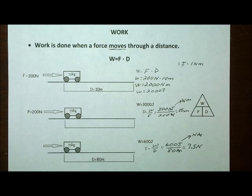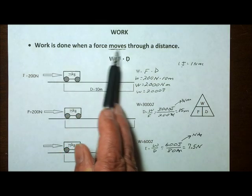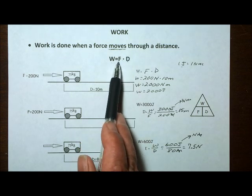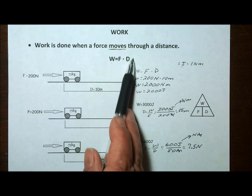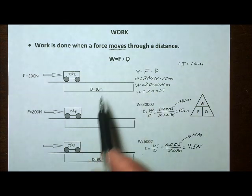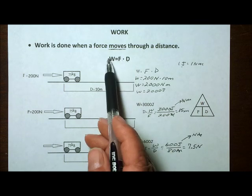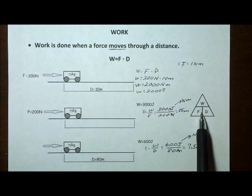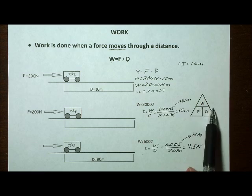So in summary, work is done only when a force actually moves through a distance. The equation for work: work is equal to force times distance. Given this equation and some information — work, force, or distance — we should be able to rearrange it to calculate any one of these three variables. Work is force times distance. Distance is work divided by force. Force is work divided by distance.